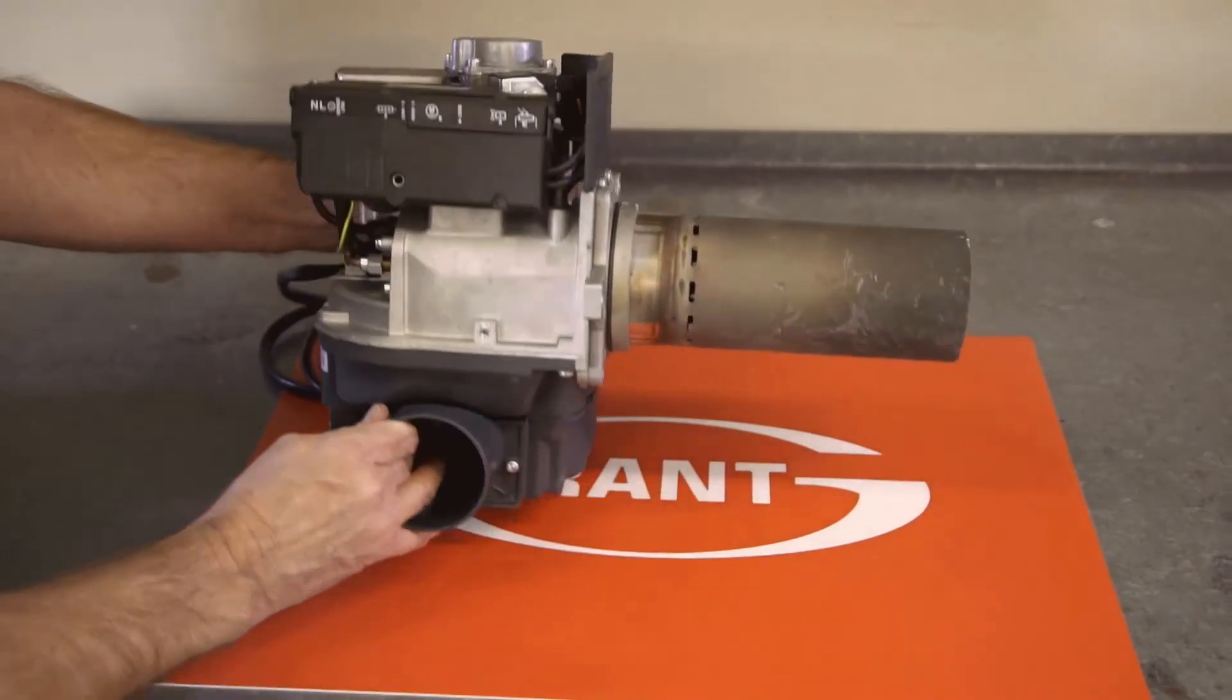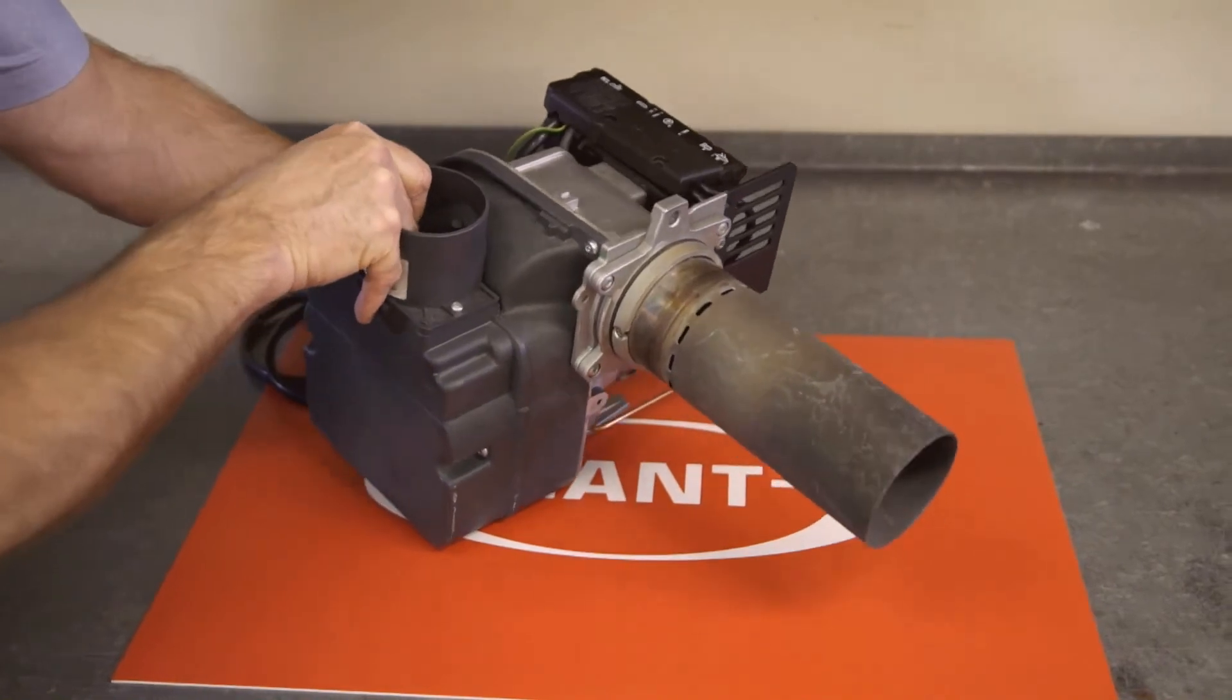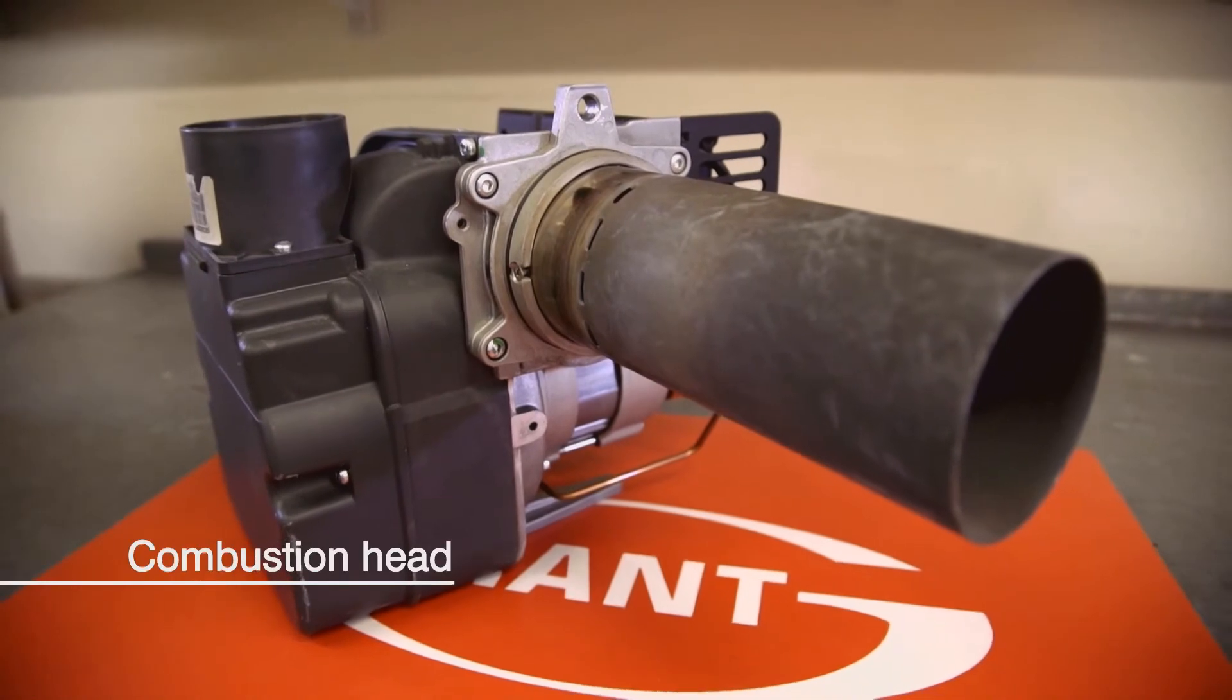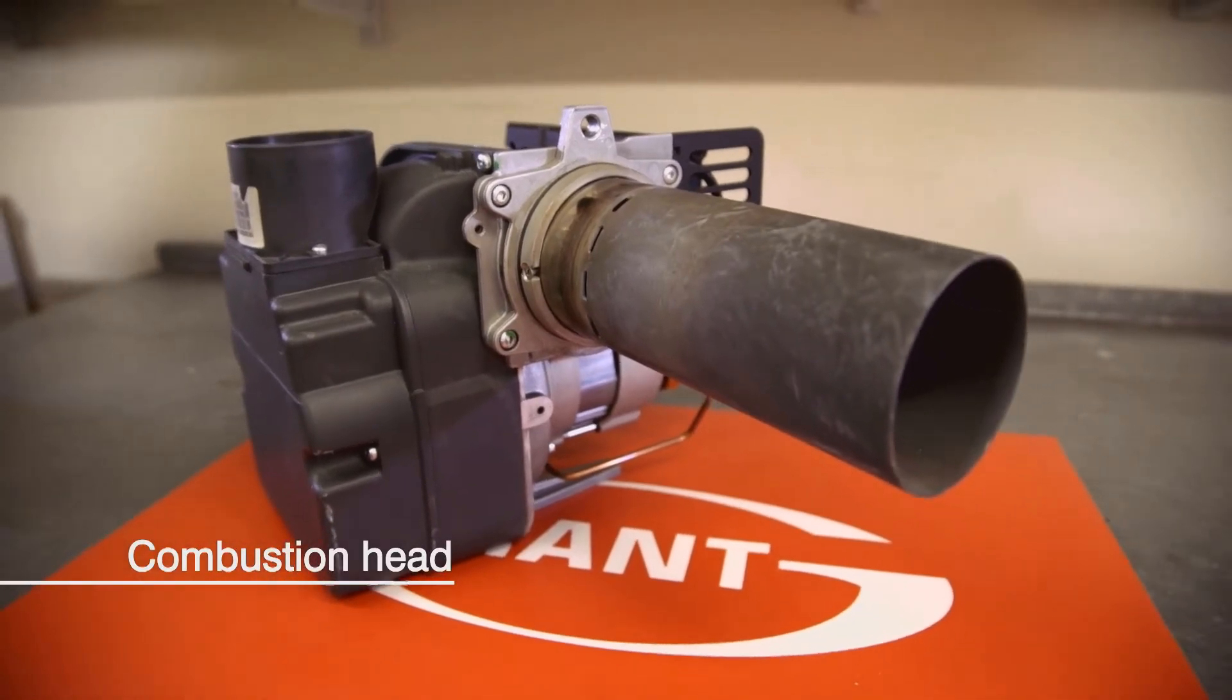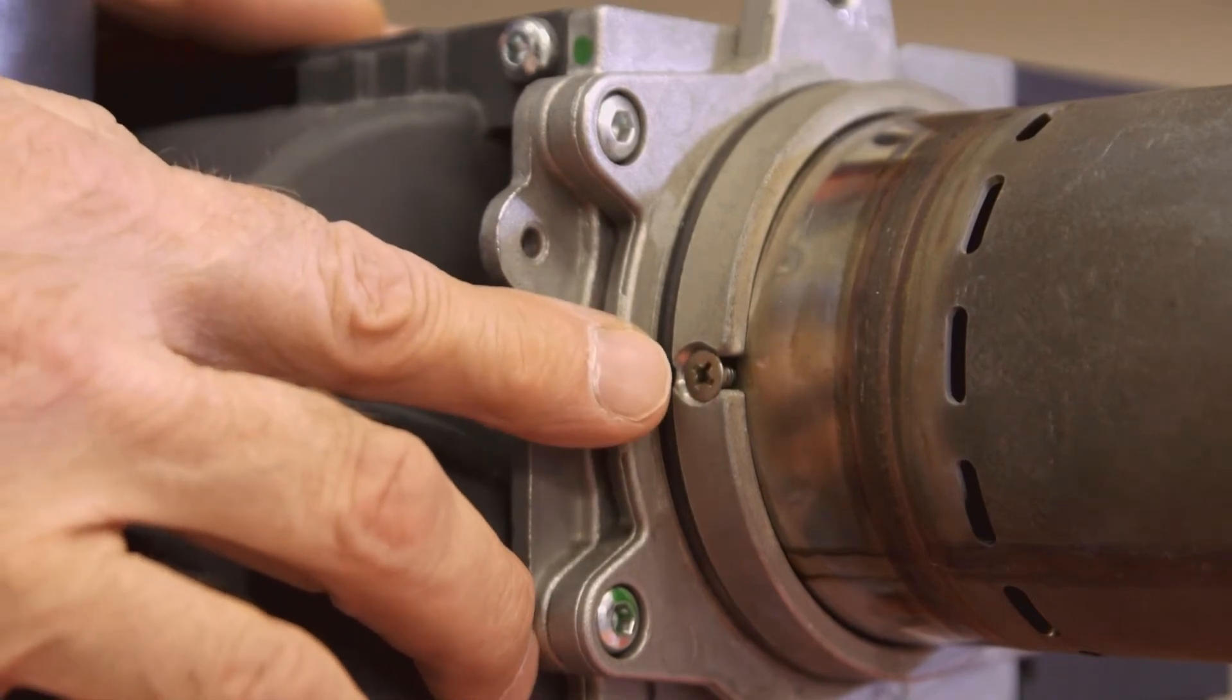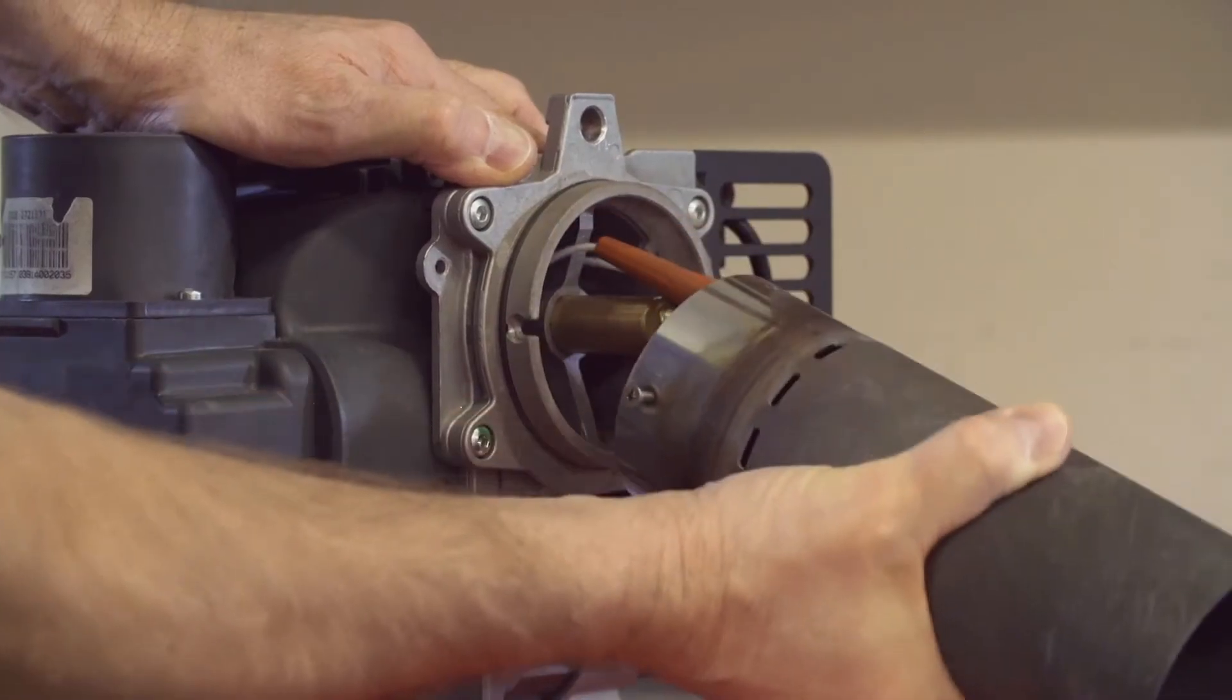Moving round to the other side of the burner you'll see the most obvious difference is the longer combustion head. You fit the combustion head the same way as usual with two screws. Just loosen these and you can pull out the head from the burner body.